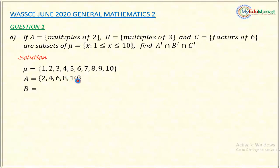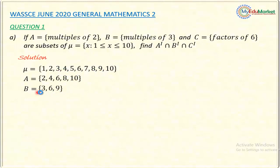Moving to set B, which says multiples of 3. Since all three sets are subsets of the universal set, all elements must come from it. The multiples of 3 are {3, 6, 9}, so those are the elements in set B.